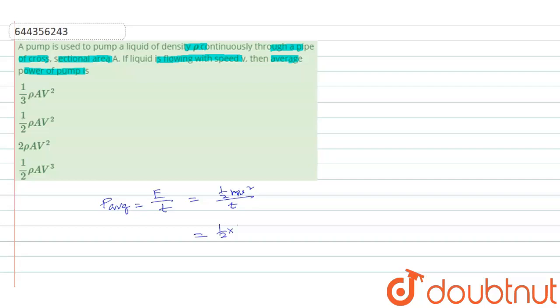Okay, then rewrite this equation like half m by T into V². Right, now let it be equation number 1.